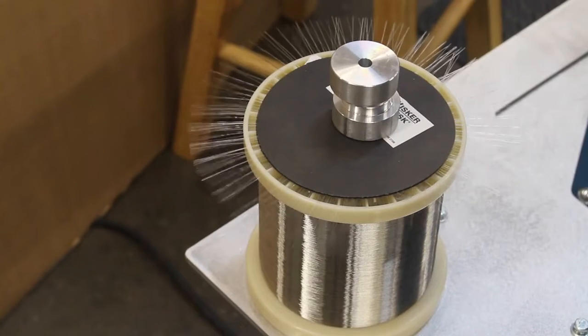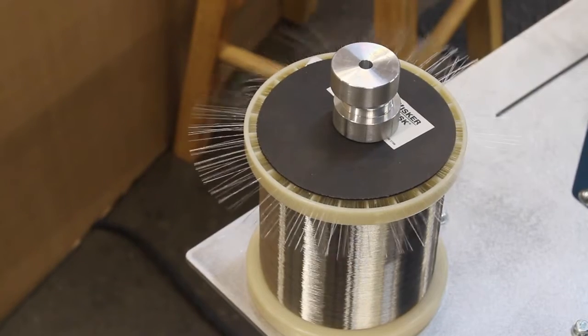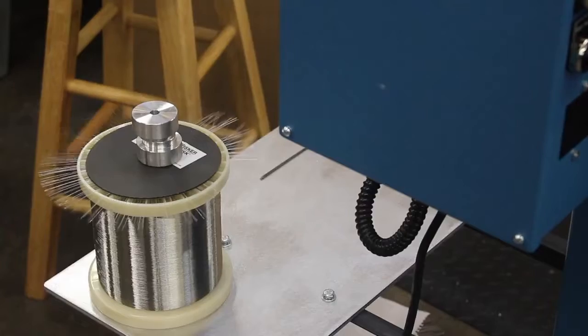Be sure that the spool flange is free of burrs or cracks. The wire path to the knitting head must be smooth and direct.